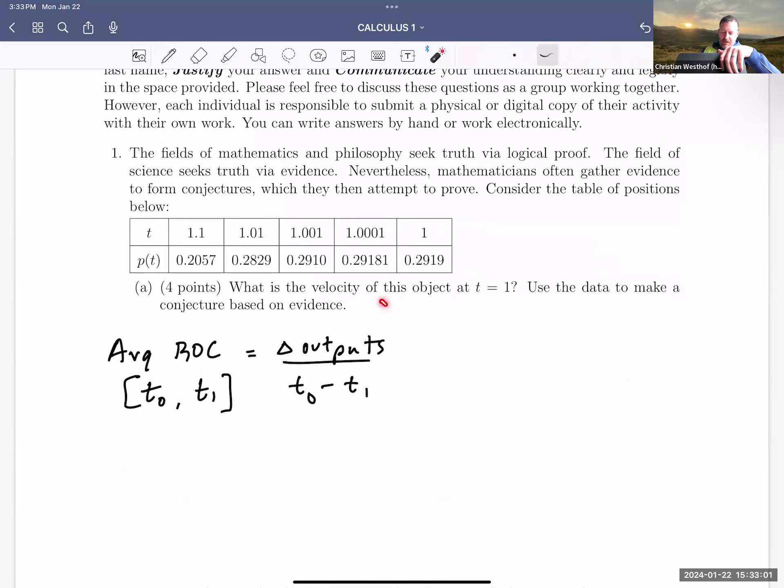This first question is asking you for velocity of an object at time t equals one for this table of data. And we got time as input, we have p(t) as position as output, and we need an average rate of change. We know average rate of change over a time interval is the change in the outputs over the change difference in the inputs. So if we want the velocity at time one, nothing in this table gives us the velocity. All we have are time and position and we could compute averages, average rates of change, average velocities, and come up with an estimate for how fast things are going at one.